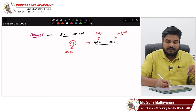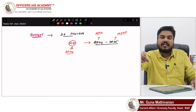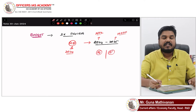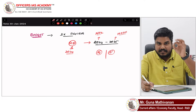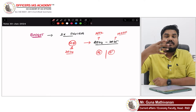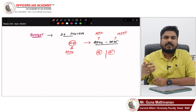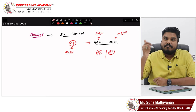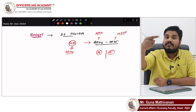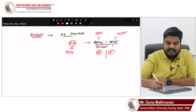This budget is being presented for the future year. Today we are on February 1st 2024, and the budget is being presented for the upcoming year. For the upcoming year, what will be the revenue and what will be the expenditure — that will be estimated. Budget is an estimate for the future, so we call it the Budget Estimate.